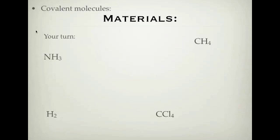Now it's your turn. Pause this video and have a go at drawing the valence structures for these molecules. You need to show your bonding pairs and your non-bonding pairs. Remember: first draw the Lewis dot structure for each atom, look for unpaired electrons, then work out how they share electrons to become stable. Pause now and try drawing the valence structure for each of the four molecules shown.